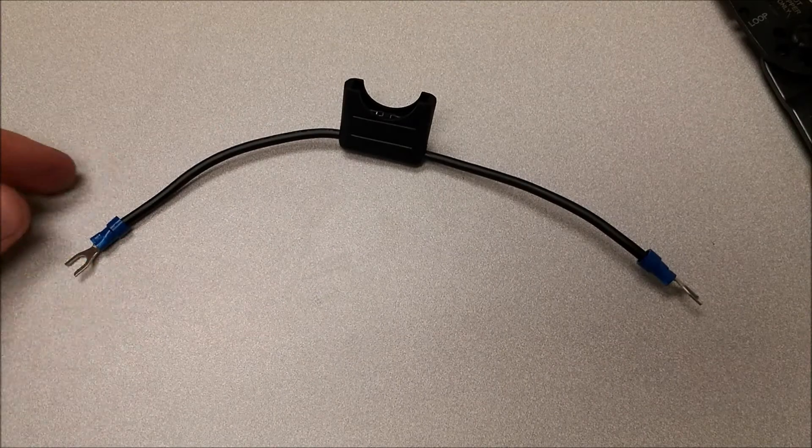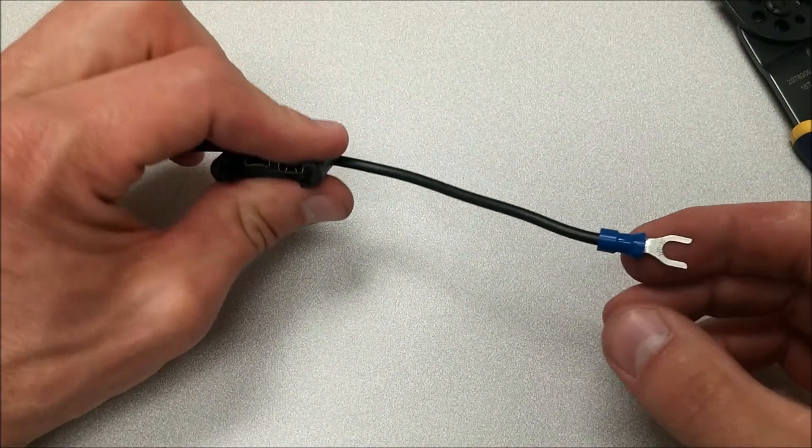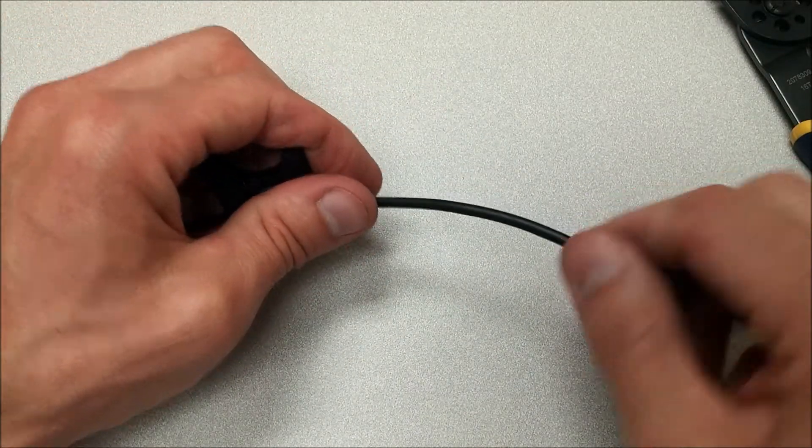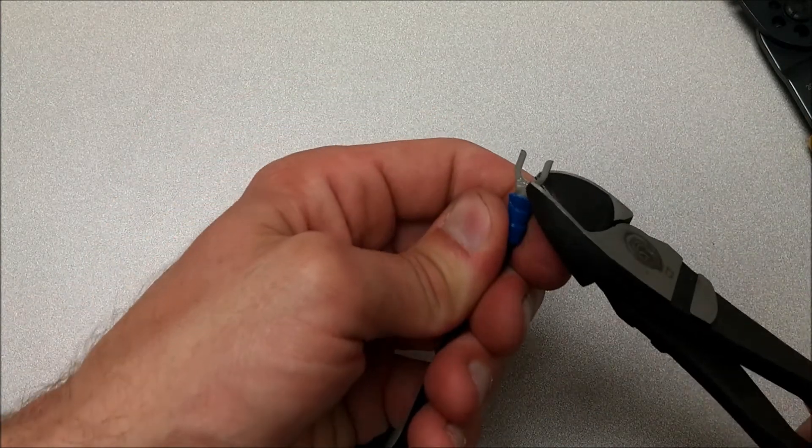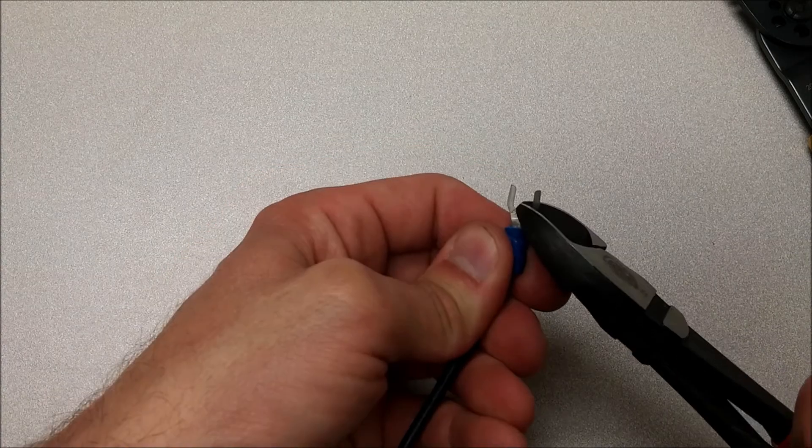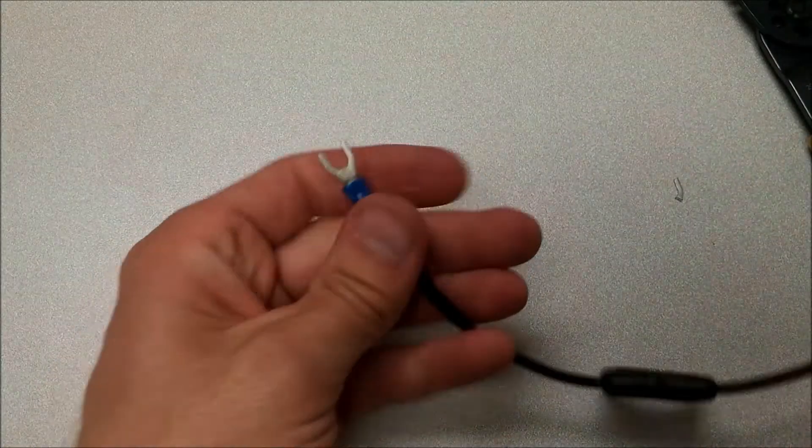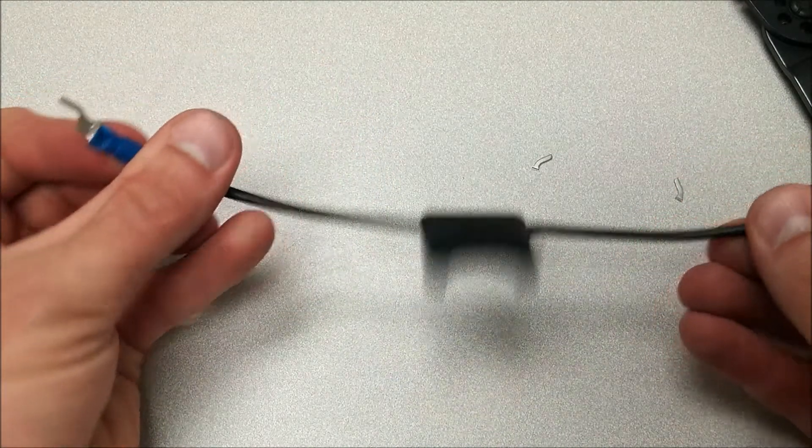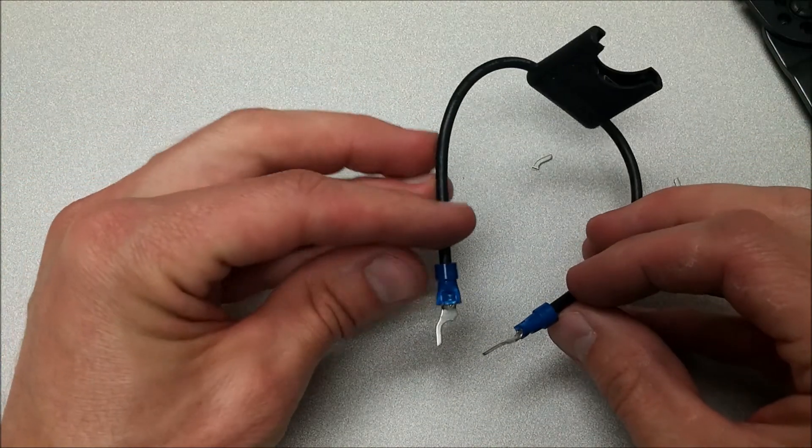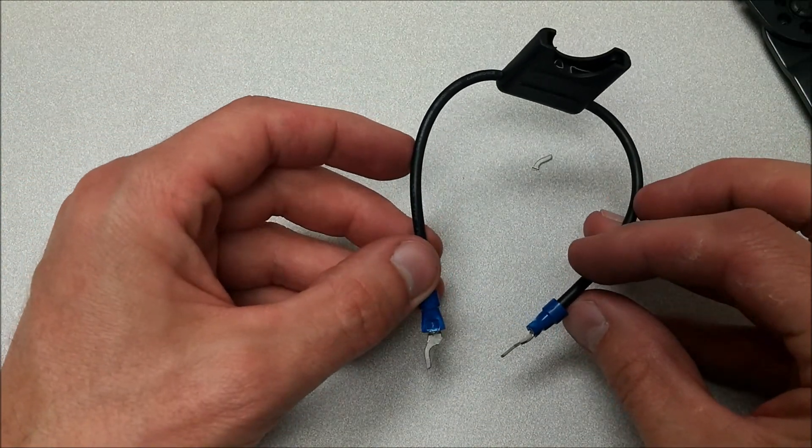There it's built other than, as you probably noticed, this is the wrong terminal end. We don't need this so we're just going to come in here and use your cutters to snip off one side like that. Now we have a tool that we can use to measure current or do other testing of our relays and fuses.